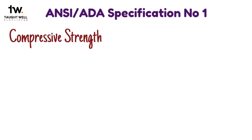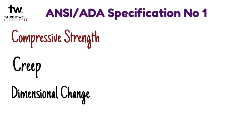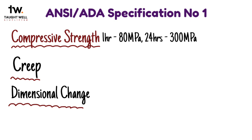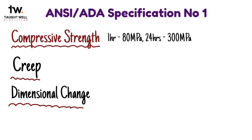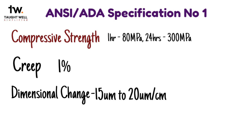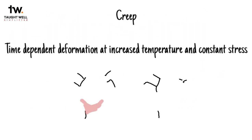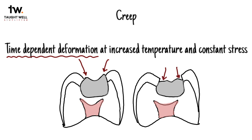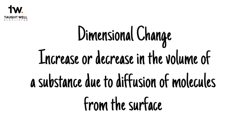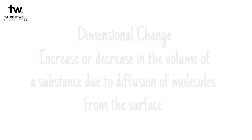ADA specification for amalgam alloy contains requirements that help control the qualities of commercially available dental amalgam. The specification lists three physical properties as a measure of amalgam quality: compressive strength, creep and dimensional change. The minimum allowable compressive strength is 80 MPa for 1 hour after setting and 300 MPa for 24 hours after setting. The maximum allowable creep is 1%, and the dimensional change between 5 minutes and 24 hours must fall within the range of minus 15 to 20 microns per centimeter. Compressive strength is the resistance of a material to breaking when a compressing force is applied to it. Creep is a time-dependent deformation at an increased temperature and at constant stress. Dimensional change is the increase or decrease in the volume of a substance due to diffusion of molecules from the surface of the substance.